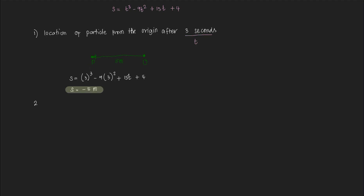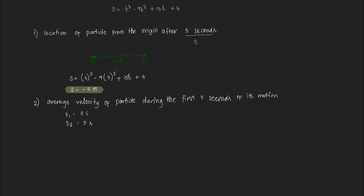The next question is: what is the average velocity of the particle during the first 5 seconds of its motion? Initially, T₁ equals 0 seconds, and T₂ is after 5 seconds. So we want to find the average velocity, V average, and that is delta S over delta T.